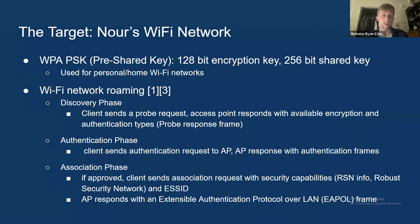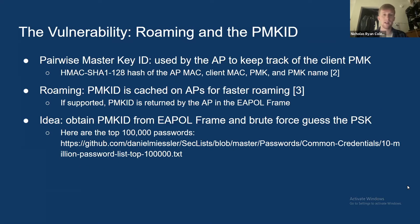Next is the authentication phase, where the device figures out if it's allowed into the network. It sends an authentication request to the AP, and the AP responds with authentication frames with a decision on whether it's allowed in. Then comes the association phase. If approved, the client sends an association request with security capabilities like encryption, and then the AP responds with an EAPOL frame. In that frame is a crucial piece of data: the PMKID.